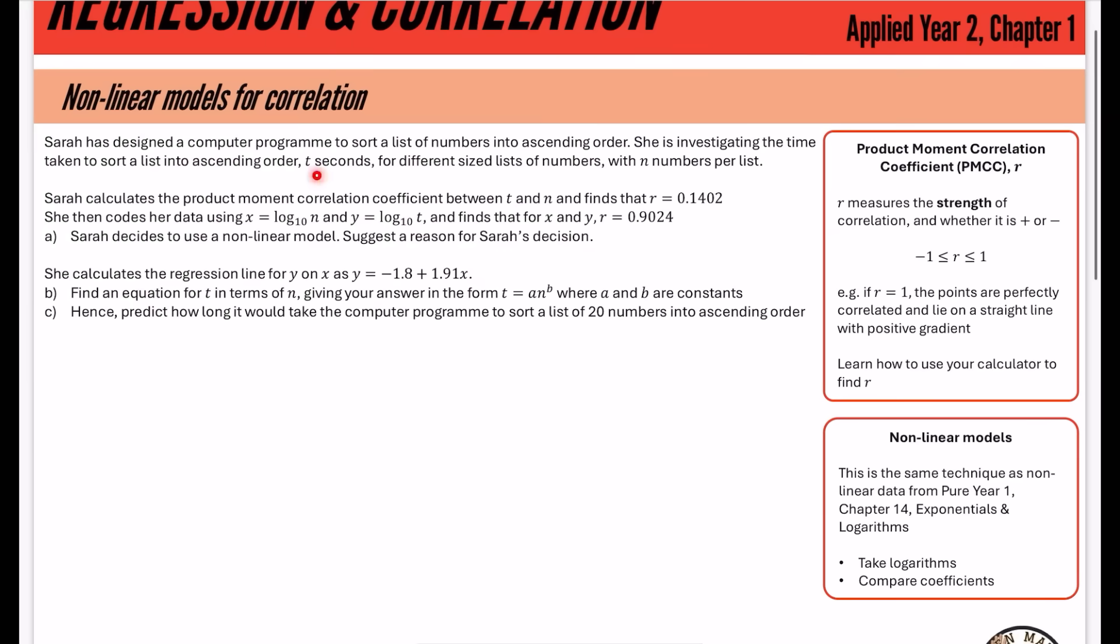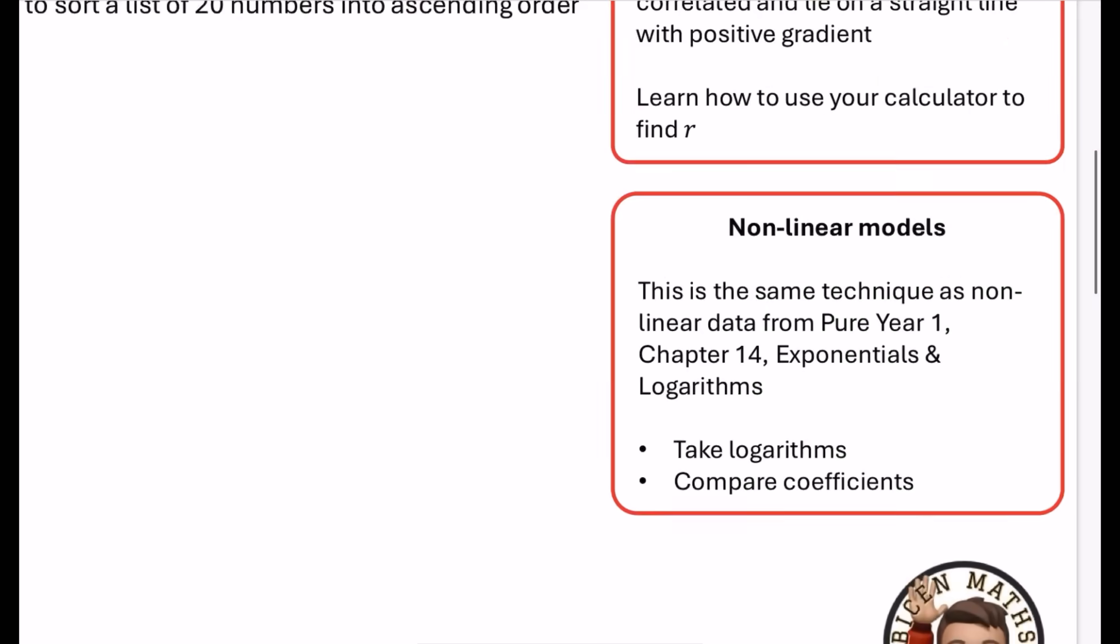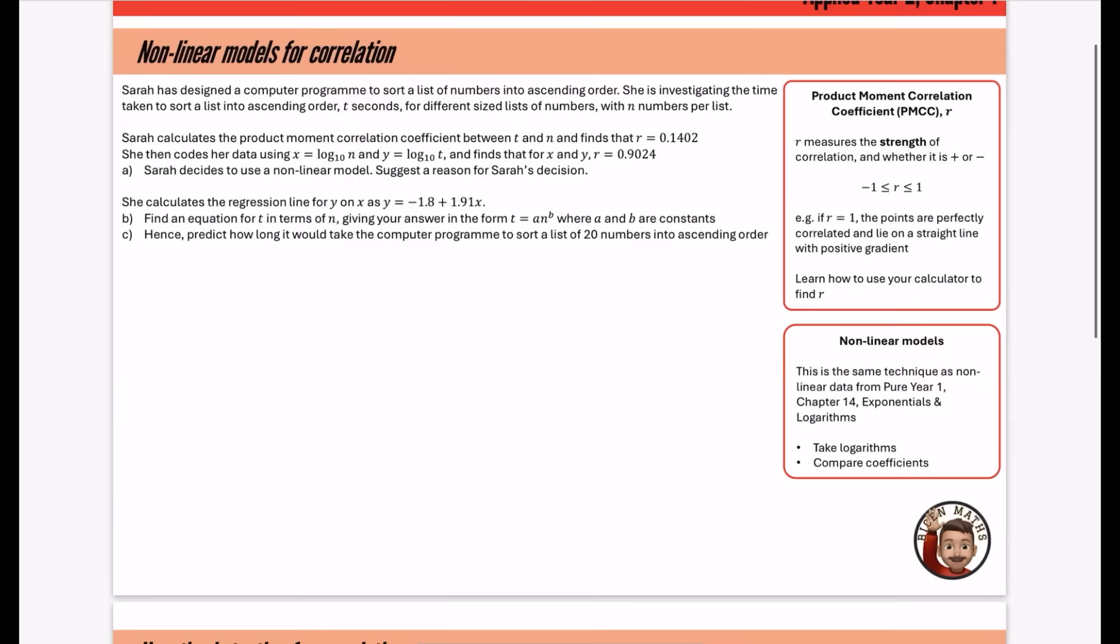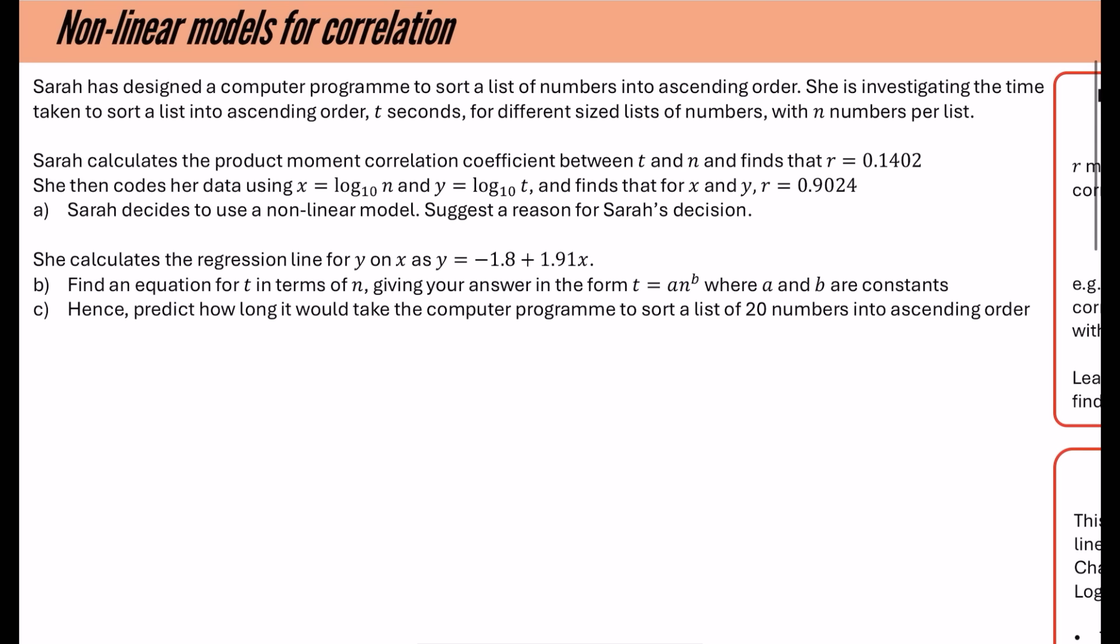And then this kind of example that we're going to do is a non-linear model for correlation, the first exercise from this chapter. The non-linear model stuff is exactly the same technique as the non-linear data from pure year one, chapter 14, exponentials and logarithms. And the technique we do there is we take logarithms of the non-linear model and we compare coefficients to try and find out what those coefficients should be. And that makes much more sense in the context of a question.